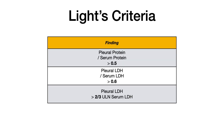Now let's get into the actual criteria. When it comes to Light's criteria, there are three criteria. The first is that the ratio of pleural protein to serum protein is greater than 0.5. The second is that the ratio of pleural LDH to serum LDH is greater than 0.6. And third, the pleural LDH is greater than two thirds the upper limit of normal of specifically the serum LDH.